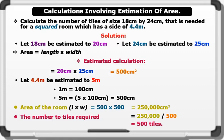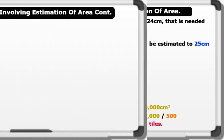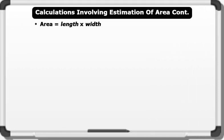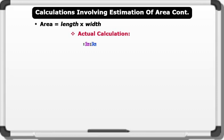That's brilliant! Now let's see the actual calculation. Remember that area equals length times width. Actual tile area equals 18 centimeters times 24 centimeters. This gives us 432 centimeters squared.